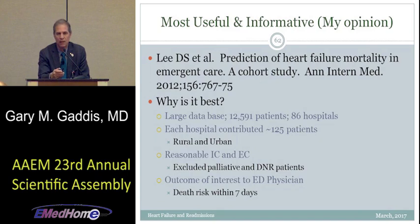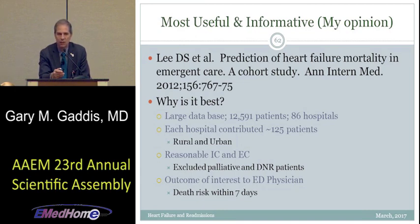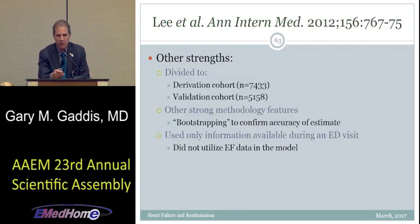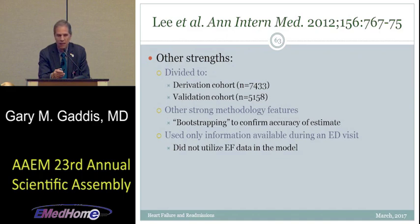The better rule is by Doug Lee's group in Toronto. They predicted heart failure mortality in emergency care in a 7-day time frame, looking at 12,000 patients at 86 hospitals across Ontario — teaching and community hospitals, rural and urban, busy and not busy. They excluded palliative care and DNR patients, used the outcome of death within 7 days, and did derivation in one patient set and validation in another. Notably, they didn't need previous heart failure data — you don't need to know the patient's ejection fraction to make this rule work.